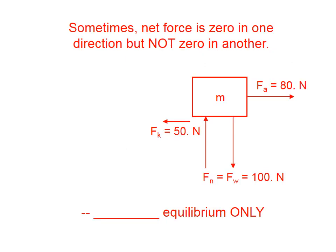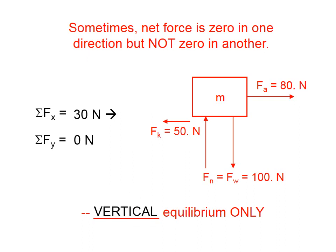Sometimes the net force is zero in one direction but not zero in another. Here we have a free body diagram where the normal force and the weight both have a magnitude of 100 Newtons — so in the up-and-down direction, the net force is zero. In the left-right, or x direction, the net force is 30 Newtons to the right, because we're pulling with 80 Newtons to the right and kinetic friction is 50 Newtons to the left, giving a net of 30 Newtons to the right. This mass is in vertical equilibrium only.